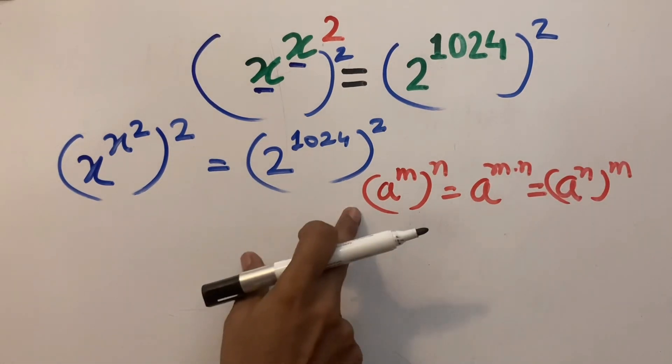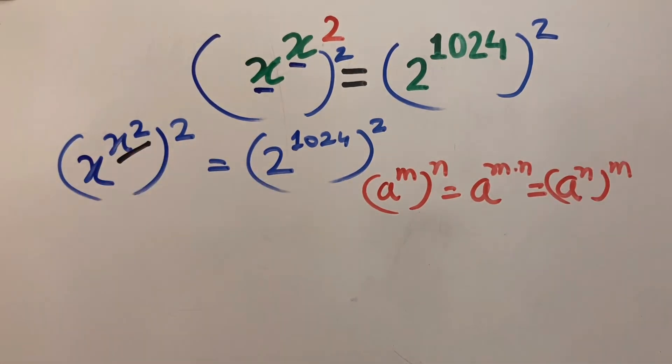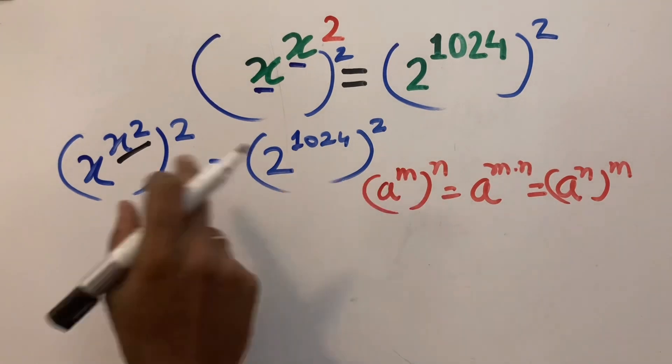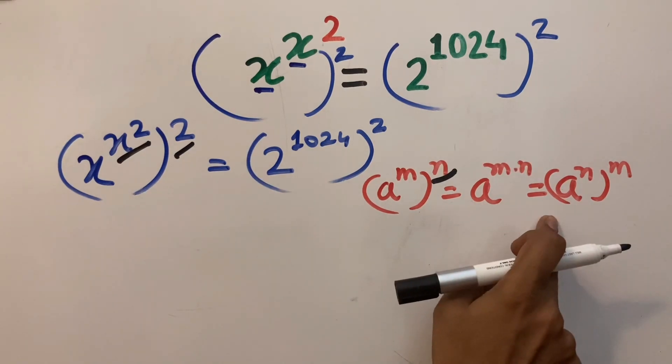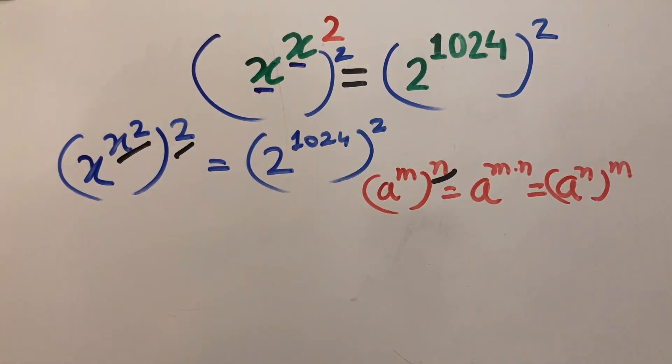By using this formula, by comparison m is x squared and n is 2, and now rearrange this as a to the power n to the power m.